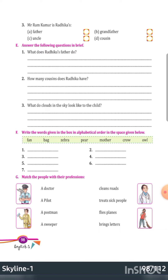Match the people with their professions. A doctor — cleans road, treats sick people, flies planes, or brings letters. A doctor treats sick people — only this one I am telling, the next you will do yourself. A pilot — flies planes. A postman — brings letters. A sweeper — cleans road. You will decide and match.